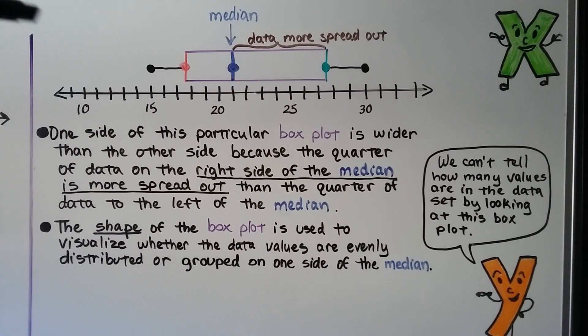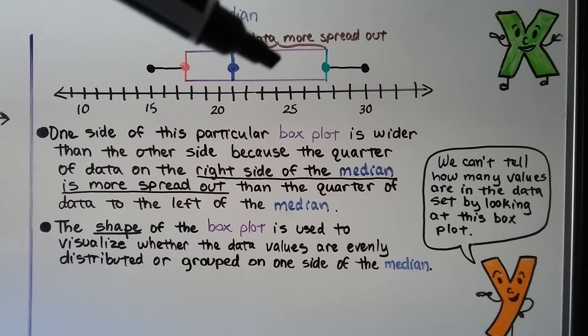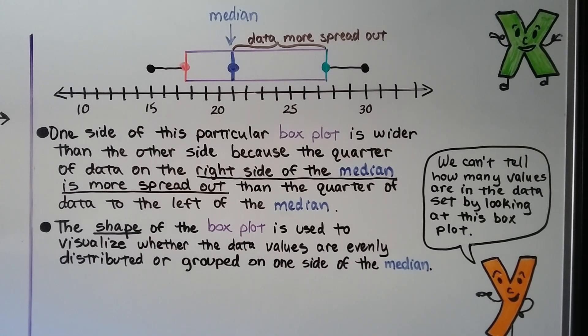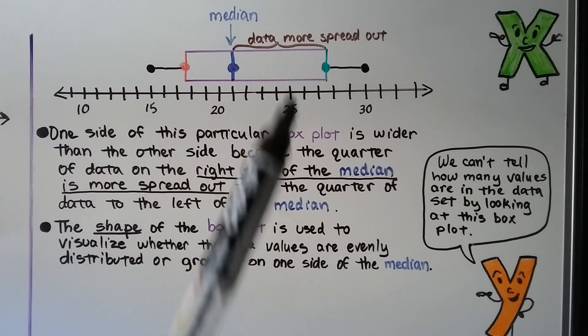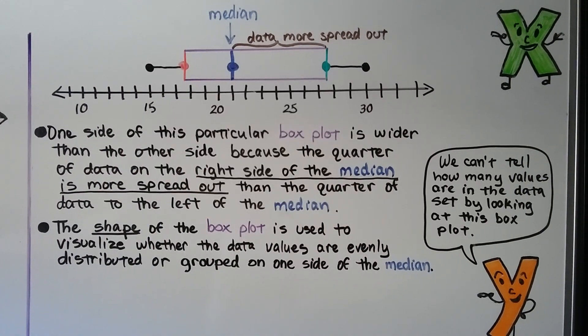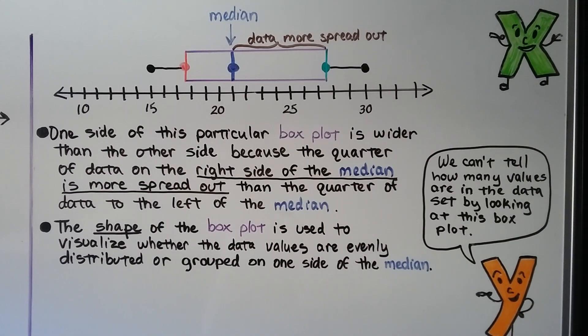So one side of this particular box plot is wider than the other side, because the quarter of data on the right side of this median is more spread out than the quarter of the data to the left side of the median.